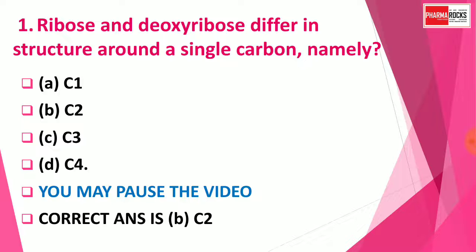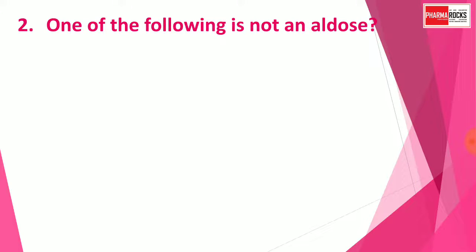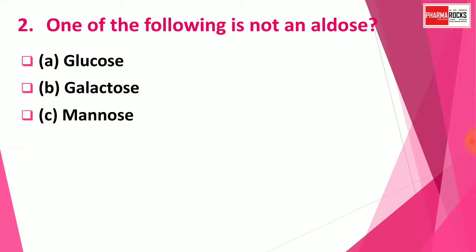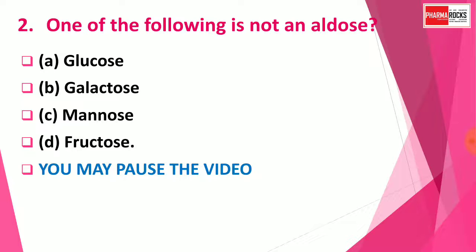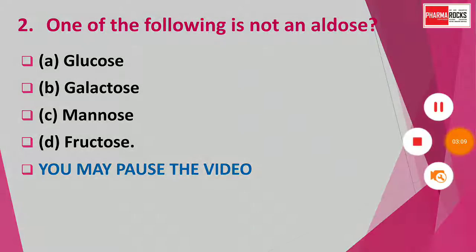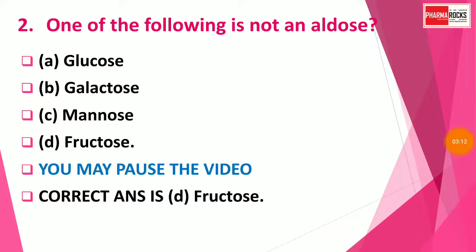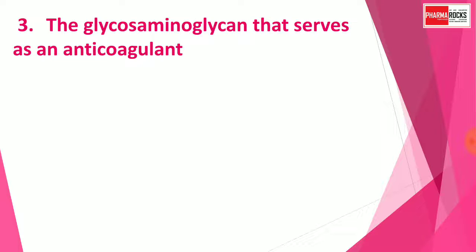Question 2: One of the following is not an aldose sugar — Option A: Glucose, Option B: Galactose, Option C: Mannose, Option D: Fructose. You may pause the video to think about the correct answer. The correct answer is Option D: Fructose. Fructose is not an aldose sugar; it is a keto sugar.